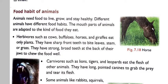Food Habits of Animals. Animals need food to live, grow and stay healthy. Different animals have different food habits. The mouth parts of animals are adapted to the kind of food they eat.